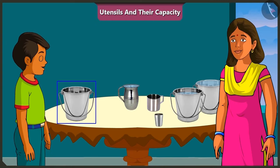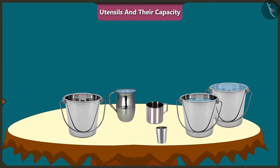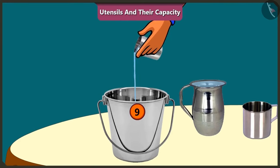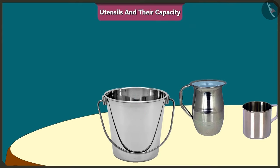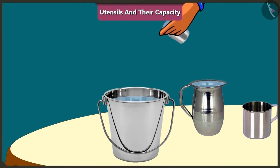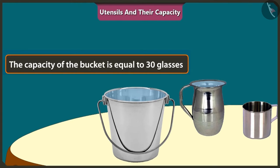Mommy, now to fill this bucket, how many glasses of water would be required? Come on, let's pour and see. 1, 2, 3, 4, 5, 6, 7, 8, 9, 10, 11, 12, 13, 14, 15, 16, 17, 18, 19, 20, 21, 22, 23, 24, 25, 26, 27, 28, 29, 30. To fill this bucket completely, we have to pour 30 glasses of water in it. So the capacity of this bucket is equal to 30 glasses of water.